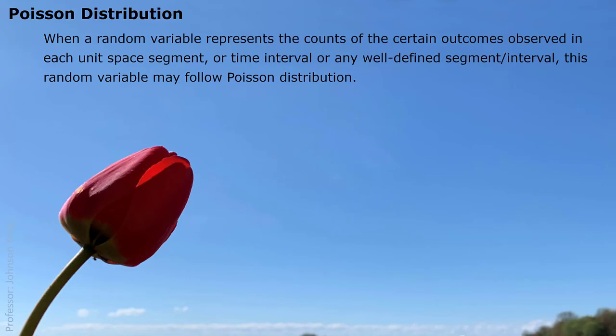Hello everyone, here we talk about Poisson distribution. Poisson distribution is a typical discrete random variable probability distribution. When a random variable represents the counts of certain outcomes observed in each unit space segment or time interval, or any other well-defined segment or interval, this kind of random variable may follow Poisson distribution.